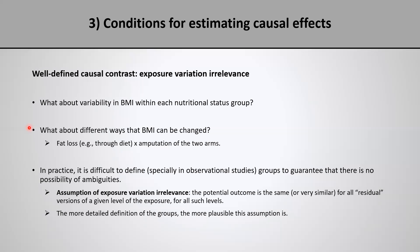The message is that in practice it is very difficult to define groups with enough detail to guarantee there is no possible ambiguity — no variance in the version of the exposure for a given exposure level. This is especially important in observational studies, because in trials and experimental studies the comparison groups are often defined with a lot of detail in the study protocol in advance. This is where the assumption of exposure variation irrelevance comes in. This assumption essentially postulates that the potential outcome is the same, or at least very similar, for all residual versions of a given level of the exposure, for all such levels. The more detailed the group definition, the more plausible this assumption is.